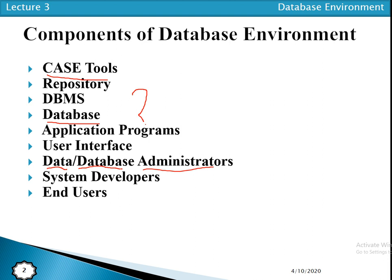The last component of the database environment is the end user. An end user is a person who uses the database for their needs in an organization. End users can add, update, or delete data to fulfill their requirements. We may have different types of end users: a naive user or a sophisticated user. A naive user is a person who has no knowledge of structured query language or the database.